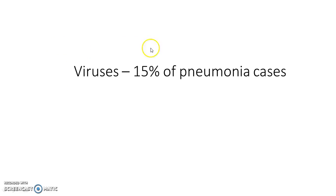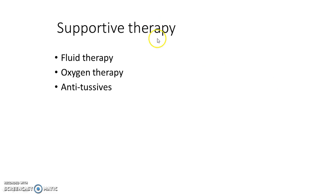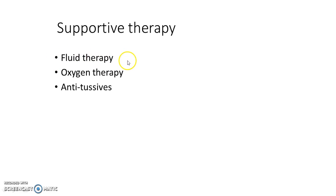Don't forget that viruses contribute to about 15% of pneumonia cases. We might also want to institute supportive therapy for patients, which includes fluid therapy if the patient is dehydrated or unable to tolerate oral intake — so you put in an IV line and institute appropriate fluid therapy. Then there is oxygen therapy: you might give supplemental oxygen or various forms of oxygen therapy depending on the situation, and sometimes you may have to intubate the patient if the condition is severe.